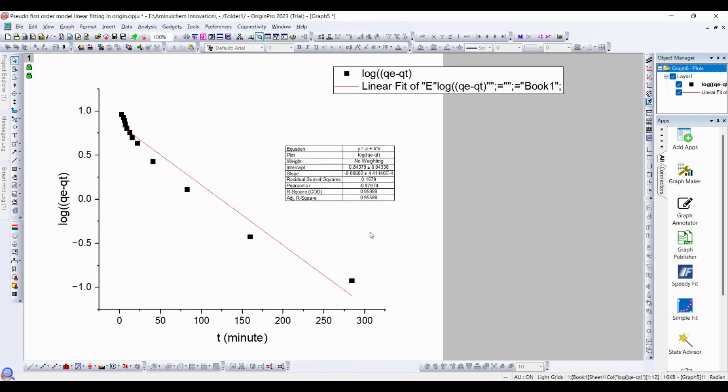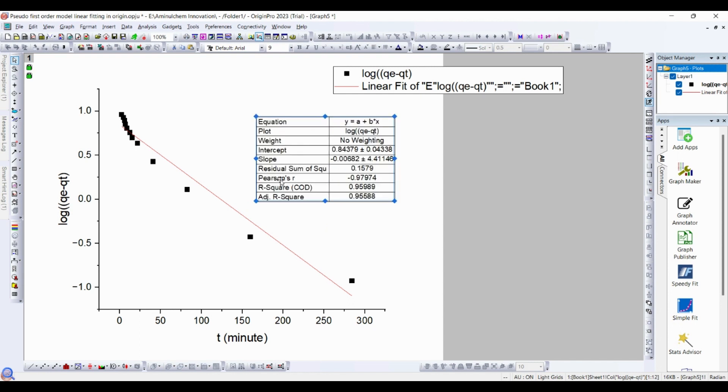Here is our fitting parameters. Slope equal to this and intercept equal to this. From slope, you can easily calculate k1 and from intercept you can easily calculate qe values.